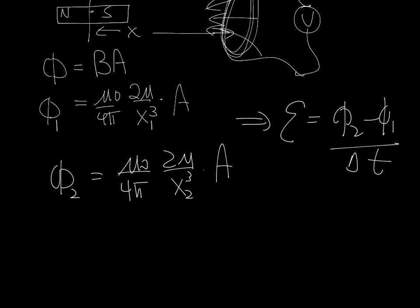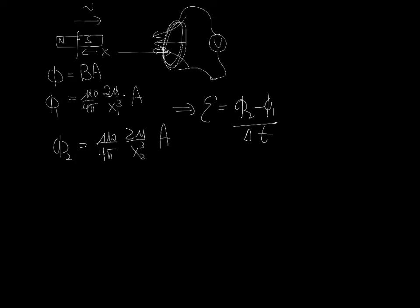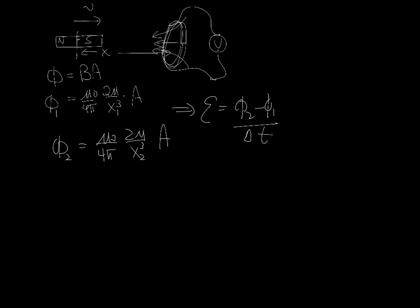Now, the other thing I can do here is to figure out which way the EMF is going to go. I'd use Lenz's law for that. Since the magnet is moving to the right, the magnetic field is getting bigger, and the flux is pointing to the left. So the induced EMF is going to want to produce a flux in the opposite direction.